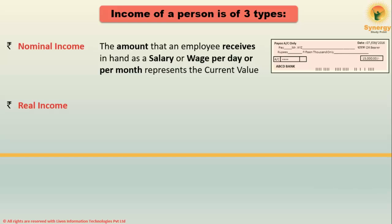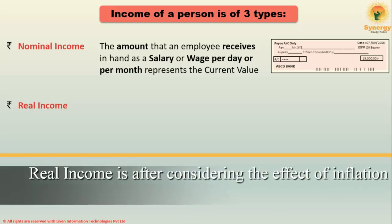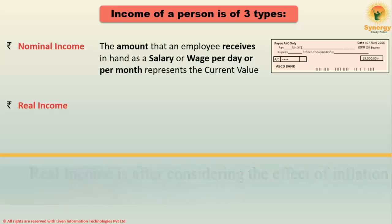Real income refers to finding the income that you are really getting, that is after removing the effect of inflation. For example, suppose you want to buy a house but presently cannot due to your low income. Next year your salary increases by 10%, but the price of the house also increased by 10%. So in reality, your 10% increase and the price rise of 10% nullified each other, meaning your actual income is similar to last year's — you still cannot buy the house.